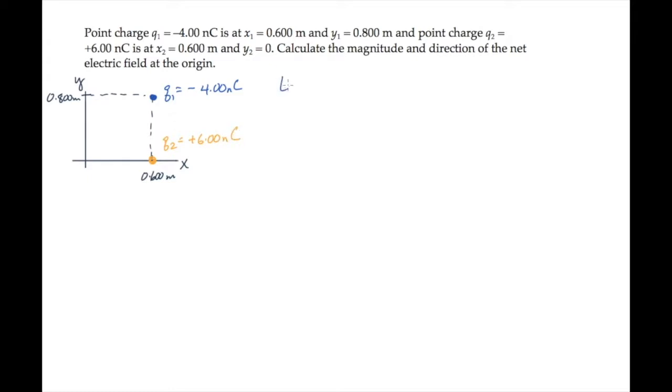The electric field from either of these charges is proportional to the charge divided by r squared times r hat, where r is the distance between the charge and the point where we're calculating the field, and r hat is the unit vector from the charge to that point.